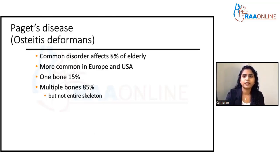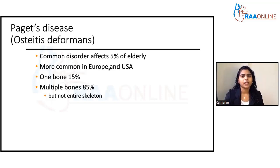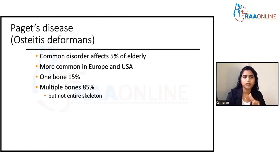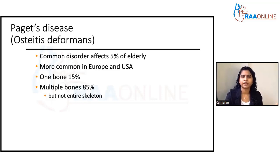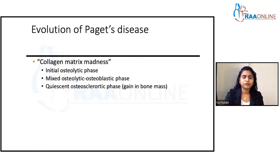Paget's disease is quite common — about five percent of the elderly get this. It is very common in Europe and USA. Usually it affects multiple bones. Single bone involvement or full entire skeleton involvement is a little bit rare. It usually involves multiple bones, sparing a few.